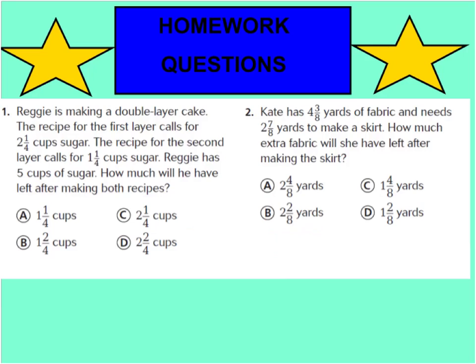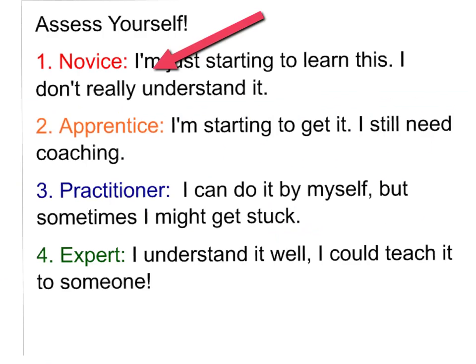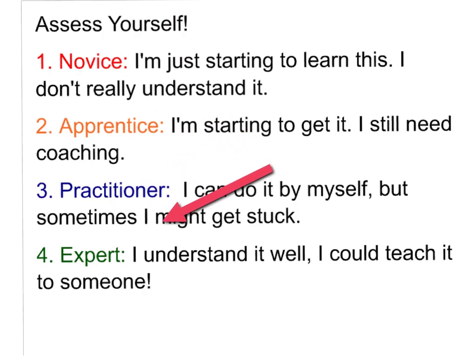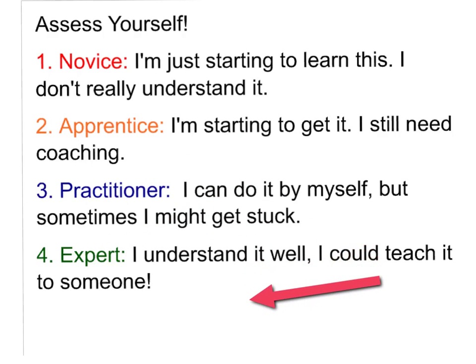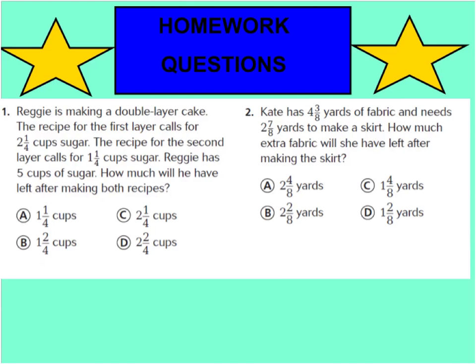Go ahead and turn your page over to the homework questions on the back side. You only have to do questions 1 and 2 for tonight. Save the last four for tomorrow night's homework. Go ahead and answer these two questions carefully. Don't forget to assess yourself — write and record somewhere on your page if you're a level 1 novice, 2 apprentice, 3 practitioner, or 4 expert, regarding how you feel about subtraction with renaming. We will check questions 1 and 2 in class tomorrow, and then finish the other questions for tomorrow night's homework. Have a super awesome night, and I'll see you bright and early tomorrow.